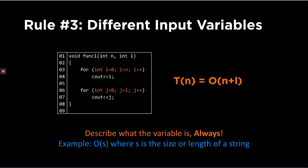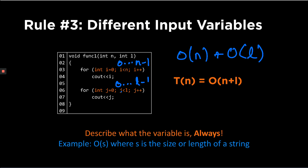The third rule is the rule of different input variables. This is the rule that most students lose a lot of points on throughout this course, because what they do is try to simplify incorrectly. In this example, using the same code from rule one — the program runs from 0 to n minus 1 and the other from 0 to l minus 1 — the total complexity would be O(n) + O(l) by rule one. You cannot simplify n + l to just O(n) or O(l)